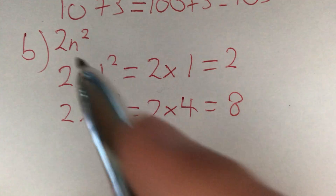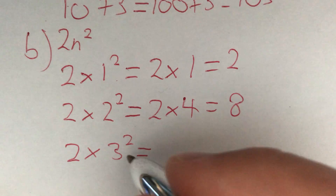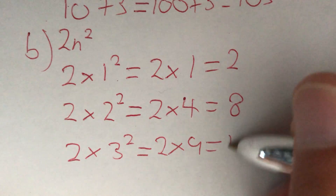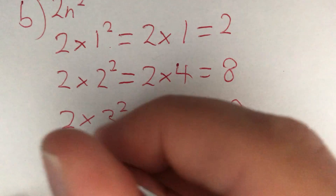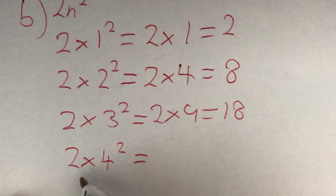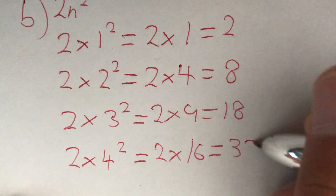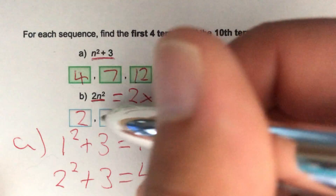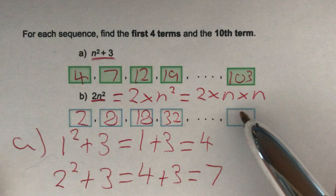Our third term, n is equal to 3. So 2 times 3 squared. 3 squared gives us 9, so we've got 2 times 9, which is equal to 18. Our fourth term, we replace n with 4. So 2 times 4 squared. 4 squared is equal to 16, so 2 multiplied by 16 equals 32. So there's our first four terms: 2, 8, 18, and 32.